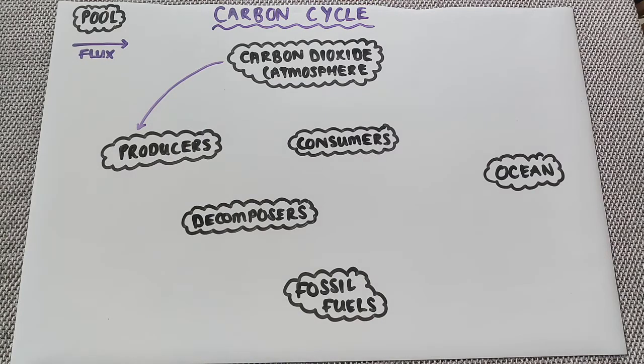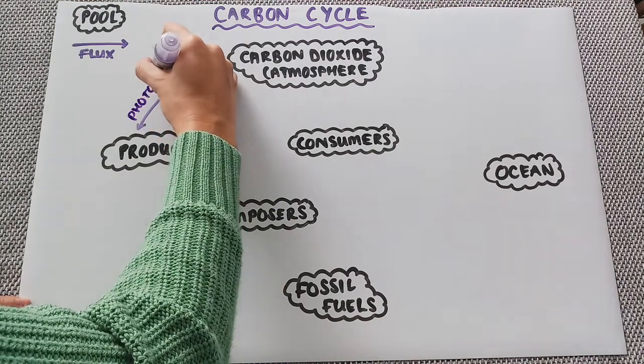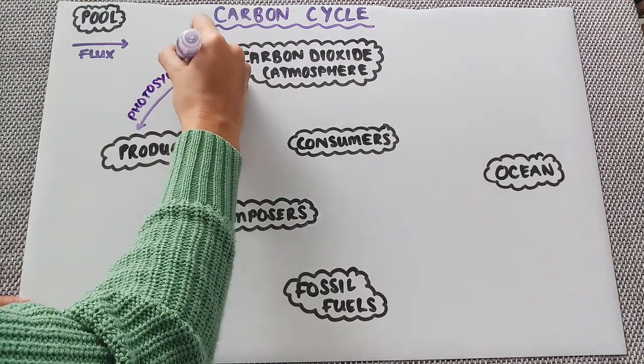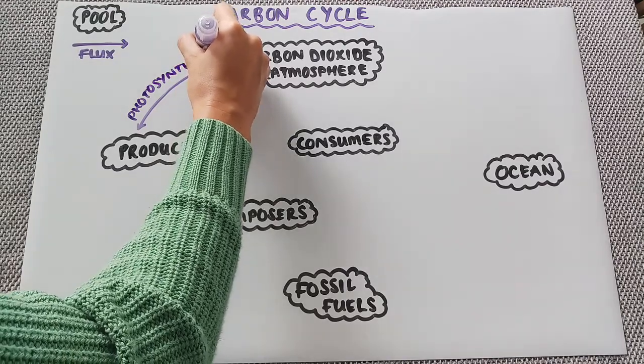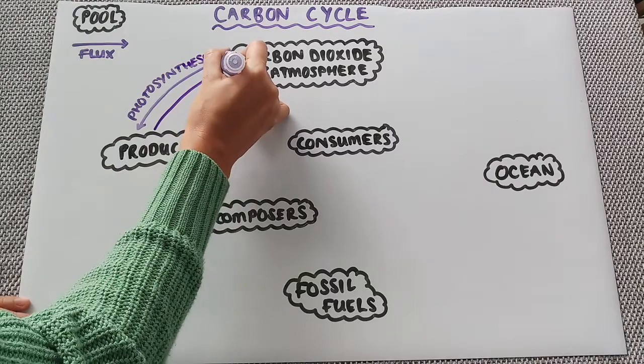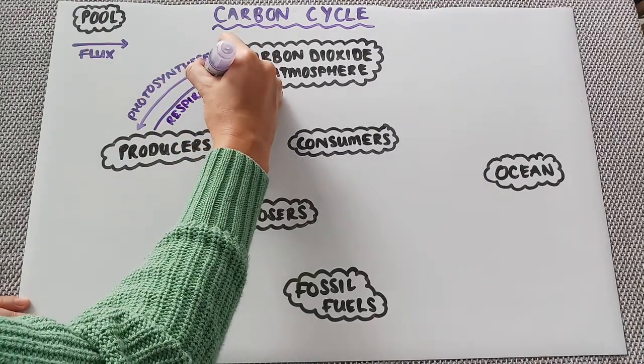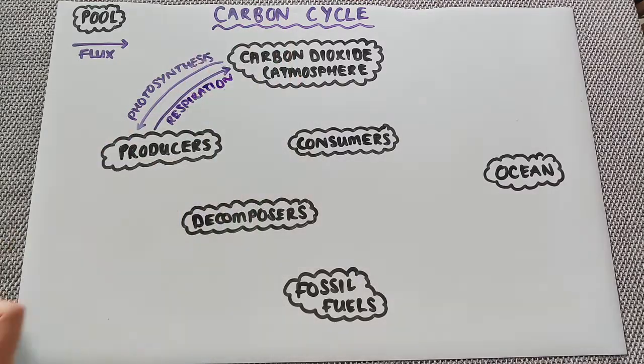The first process where carbon dioxide is being taken out of the atmosphere is through the process of photosynthesis. Also remember plants are also releasing carbon dioxide into the atmosphere through the process of respiration.